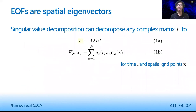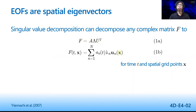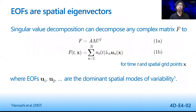Any spatial-temporal field F can be decomposed into a temporal amplitude matrix A, eigenvalue matrix lambda, and spatial matrix U across all spatial points X, where the rows of U are known as the empirical orthogonal functions, or EOFs. The top EOFs have the highest contributions to F, representing its dominant spatial patterns.